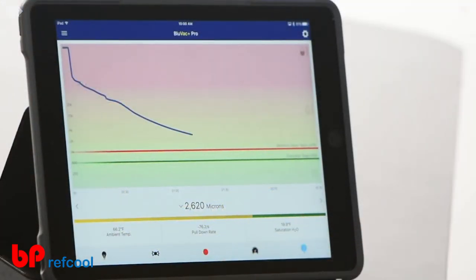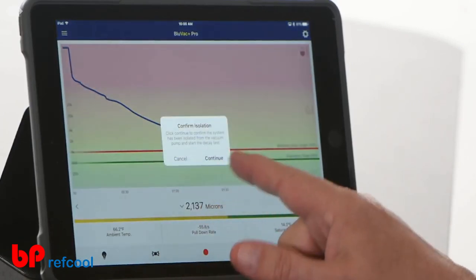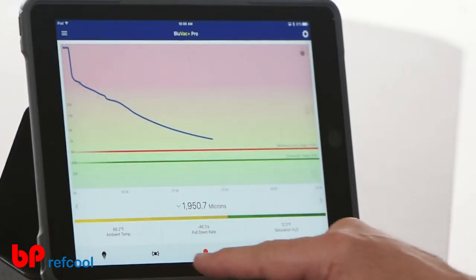This is our valve on here. This valve is the isolation valve. Right now that's open because we're pulling a vacuum. If I tap that button, it's going to ask me if I want to confirm isolation. I can confirm or continue. I'm going to go ahead and cancel because I don't want to isolate it right now.